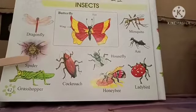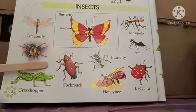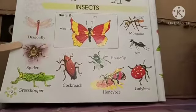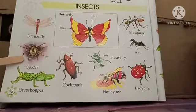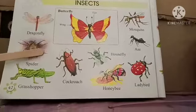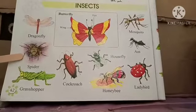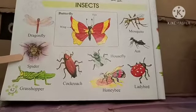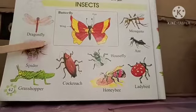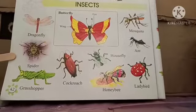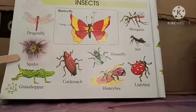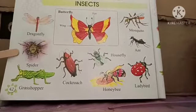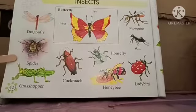Next, we have spider. Spider builds a web. Have you seen a spider? We can find them very commonly in our house — in the corners and loops of the house, we can find a few spiders.